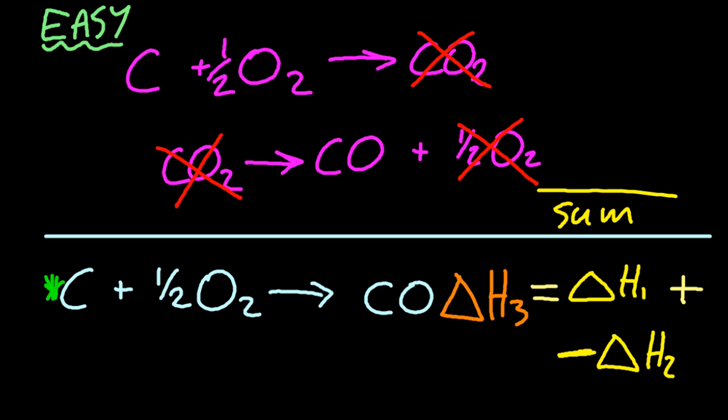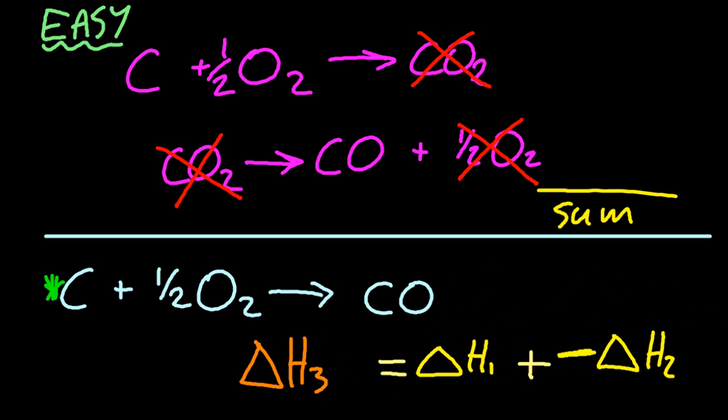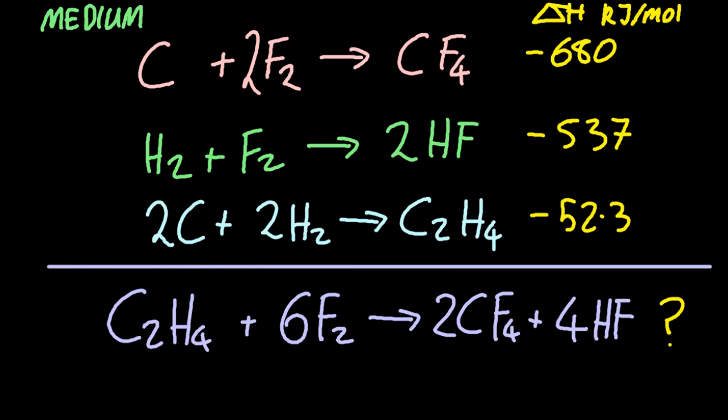Now we're going to do this a couple more times. But that's a simple one, and occasionally the IB have asked you to remember this one. This is a medium difficulty one, so we've got three equations, and the target equation is at the bottom there. So I have to work out the delta H for the target equation.